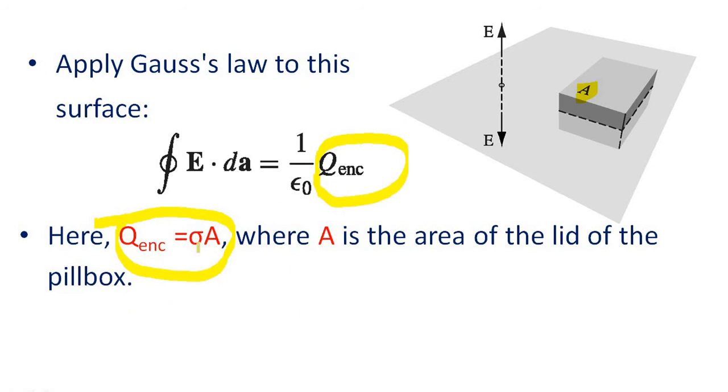So Q enclosed equal to sigma A where A is the area of the lid of the pillbox. So we can substitute sigma A instead of Q enclosed. So the Gauss law becomes closed integral E dot dA equal to 1 by epsilon 0 sigma A. Instead of Q enclosed we just substituted this part.